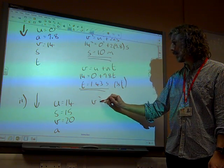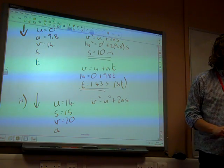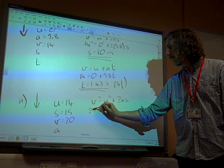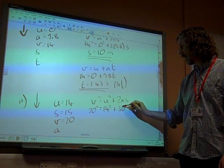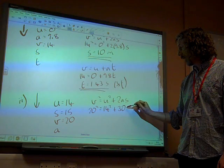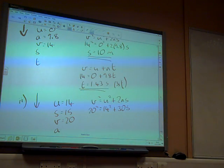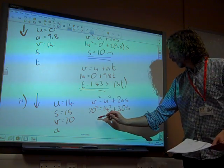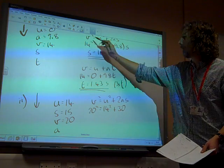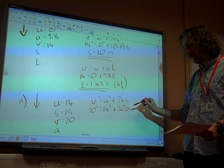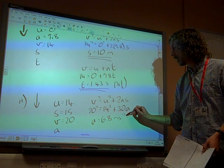We've got V squared is U squared. There's 2AS all over again. So 20 squared is 14 squared plus 2 times 15 times S. And if we rearrange that, we end up with 204 over 30, which gives us... That's not an S. That's A, isn't it? Sorry. S was the 15. So we rearrange that, and it gives us A is 6.8 metres per second per second.